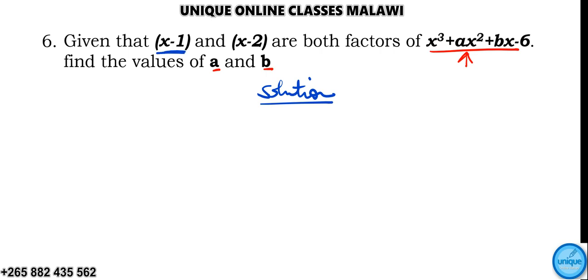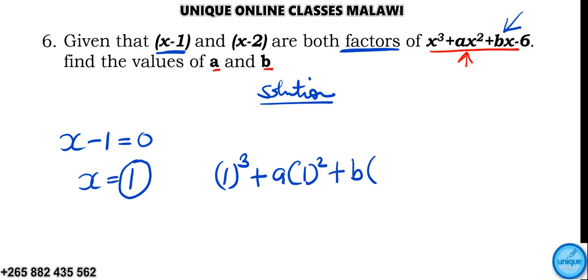So let's take this factor, x minus 1. I'm going to equate this one to 0. So x minus 1 equals 0, so x equals positive 1, which means that if we take 1 here, we will be able to answer that as 0 because it's a factor. So where there is x, I should put 1. So 1 cubed, then plus a times 1 squared, plus b times 1, then minus 6.